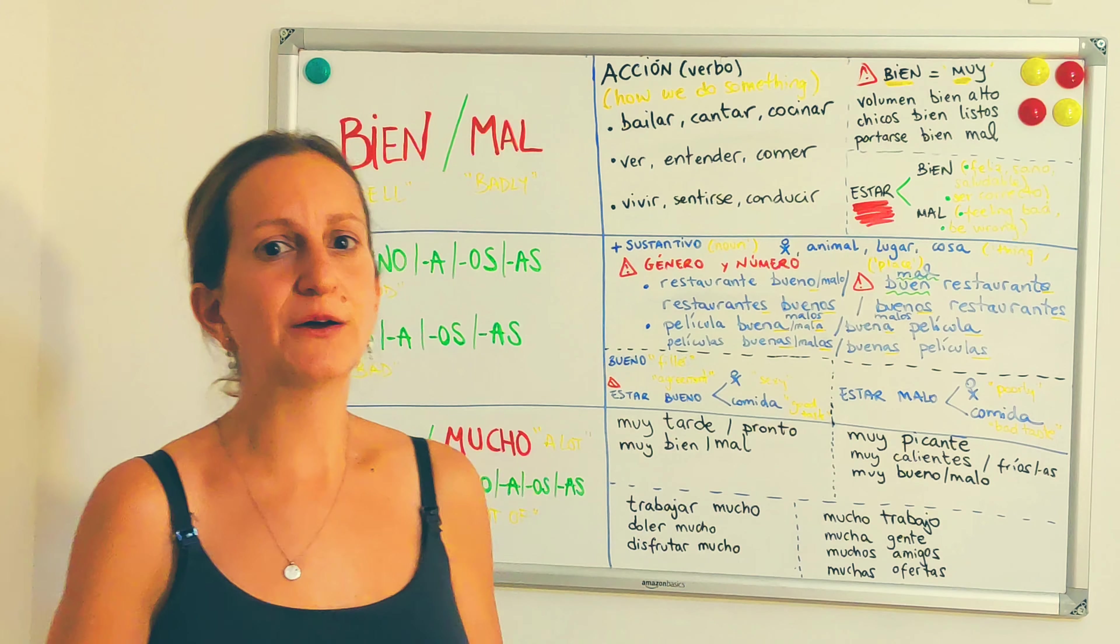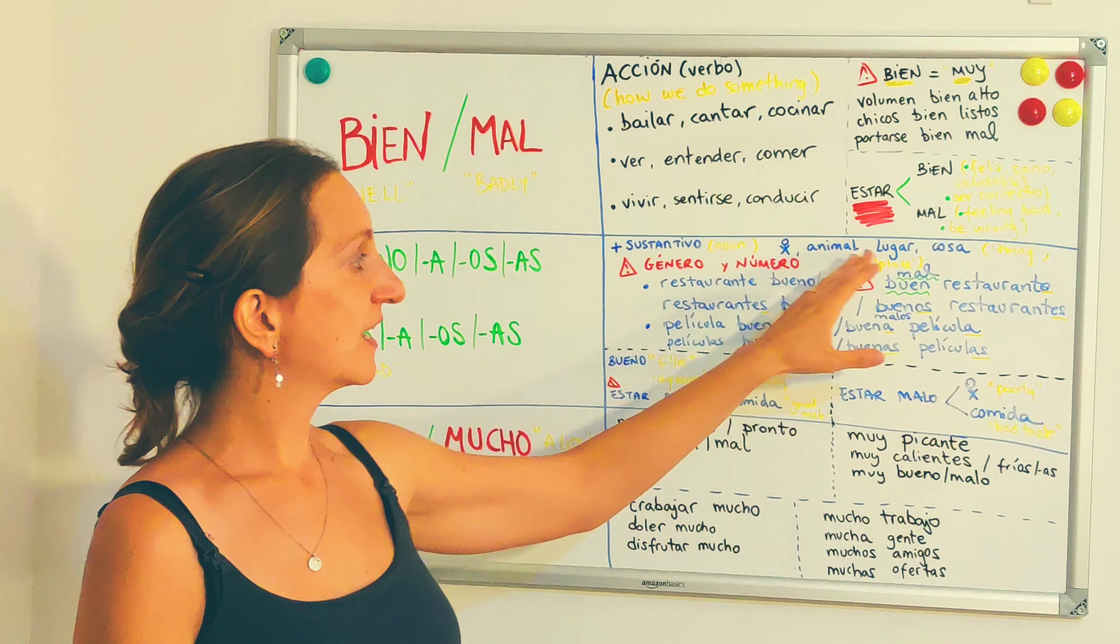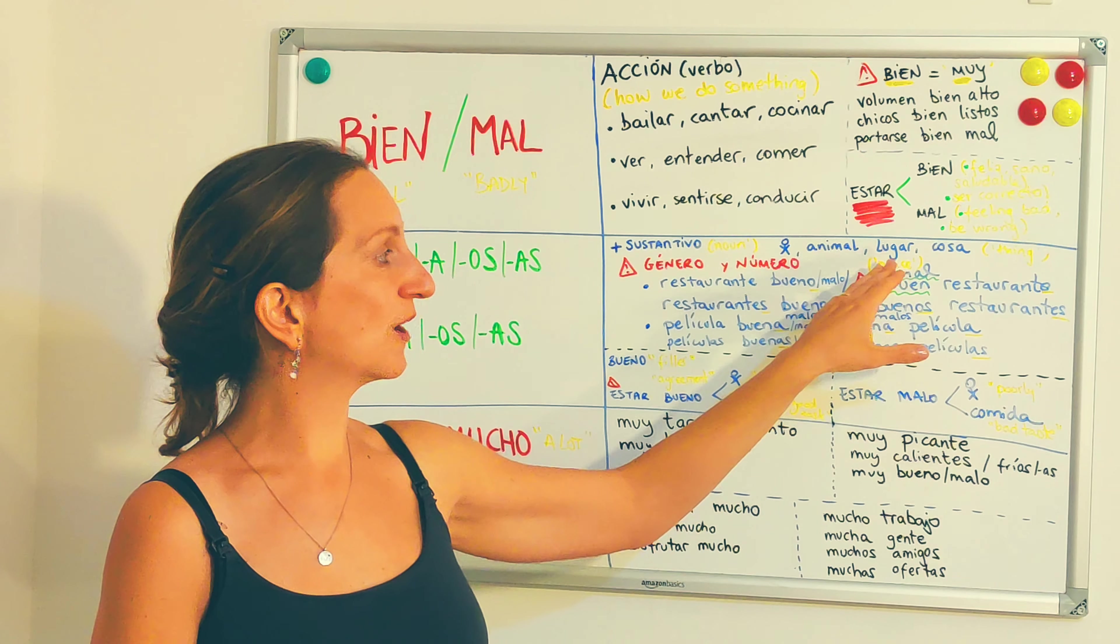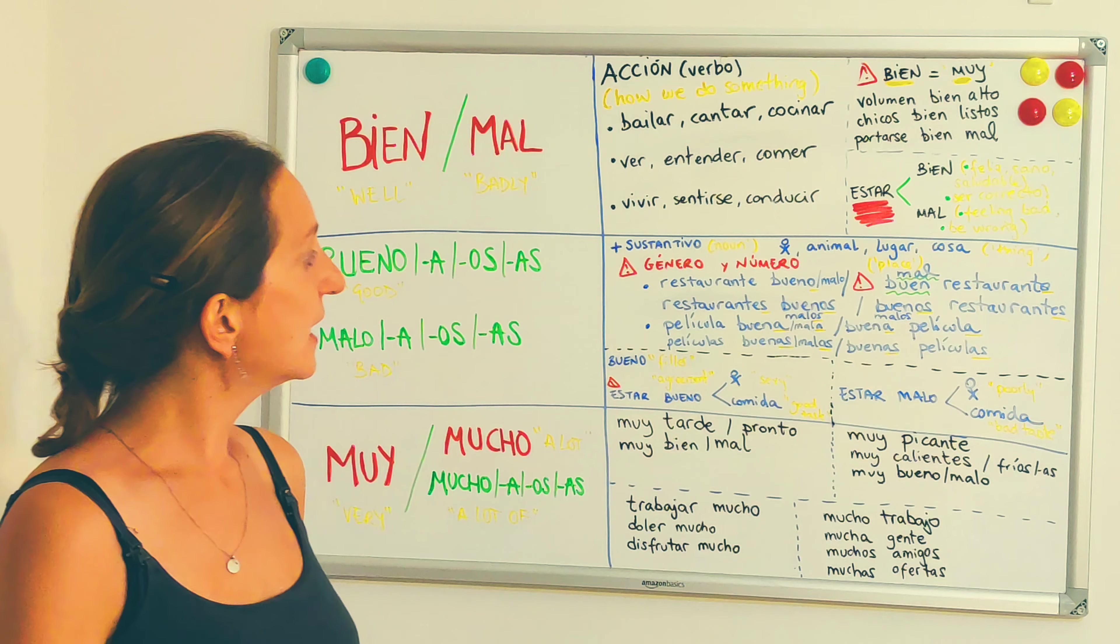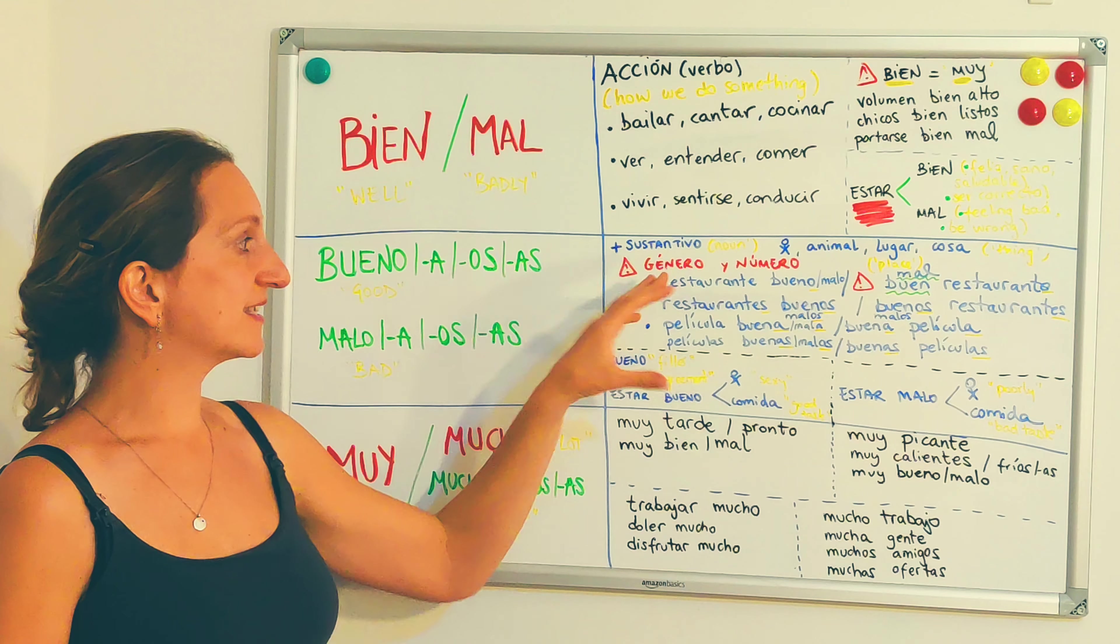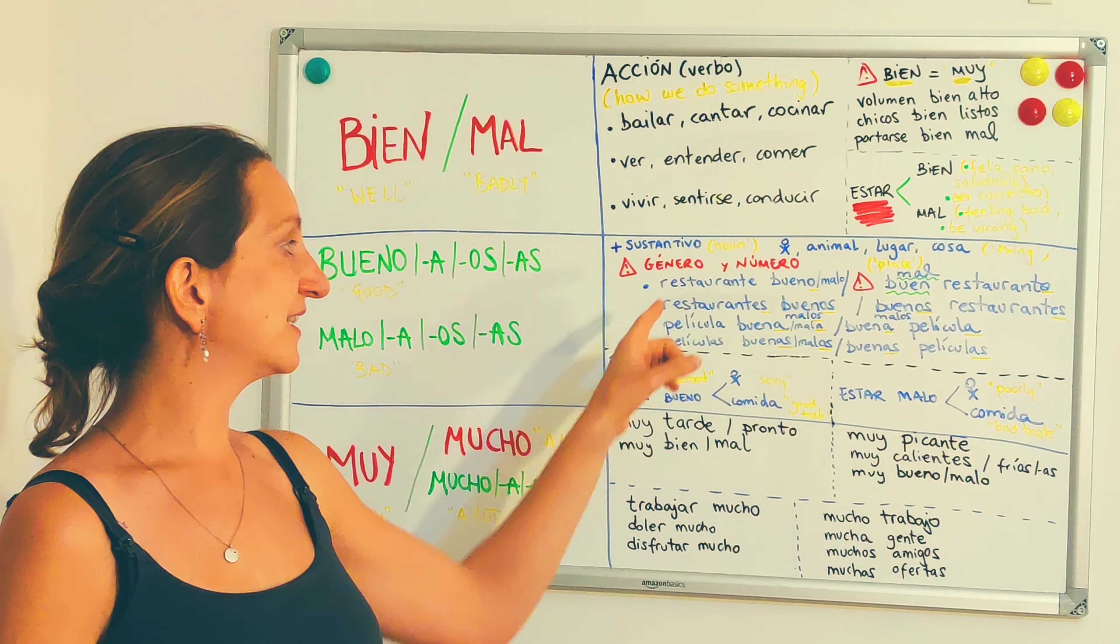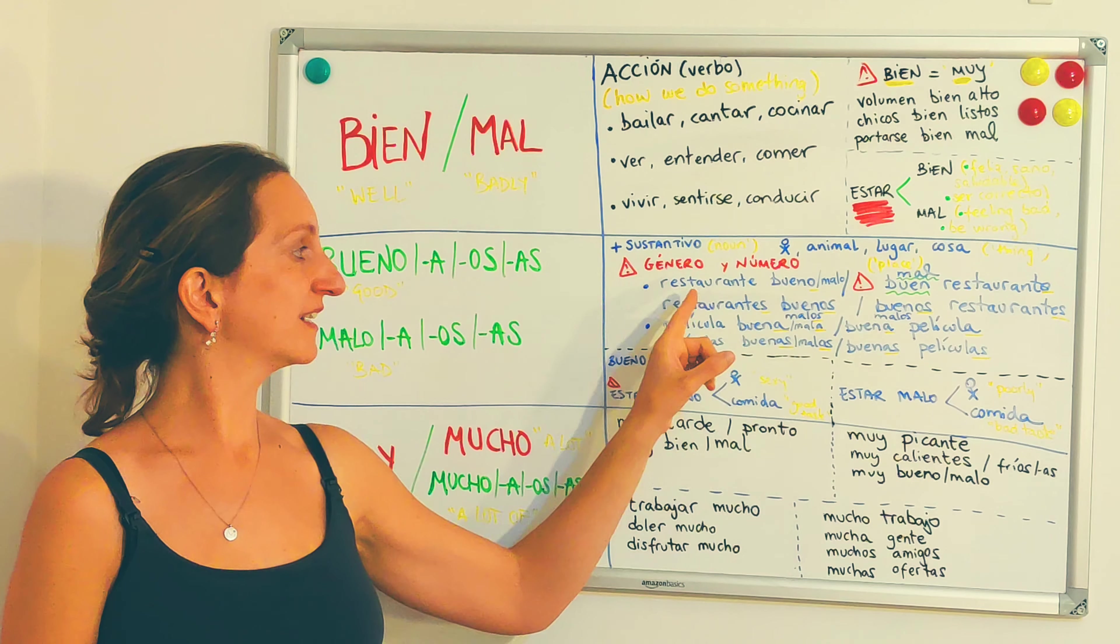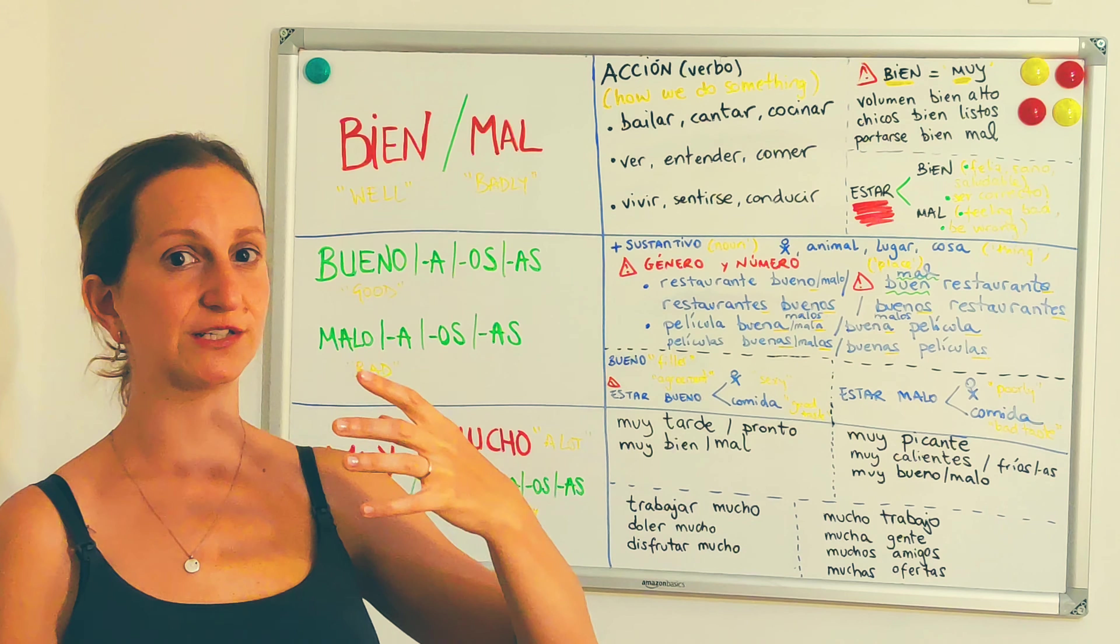What's a noun? A noun is, for instance, a person, an animal, a place, lugar, or a thing, una cosa. So this means that whatever it is, it will match in gender and number, género y número, with that noun that we are referring to.